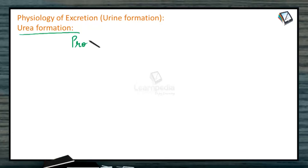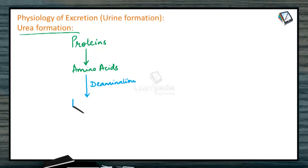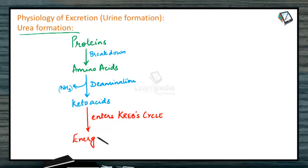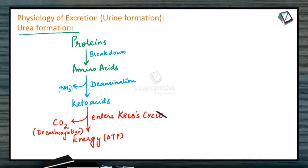On ingestion of proteins in our daily diet, these proteins get converted into amino acids. These amino acids undergo deamination and form keto acids — deamination means the removal of ammonia. These keto acids enter the Krebs cycle and form energy in the form of ATP, and carbon dioxide is liberated through a process known as decarboxylation. This ammonia and carbon dioxide, along with the energy, further form urea.